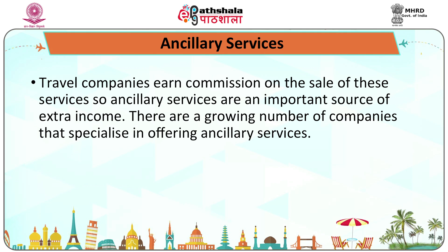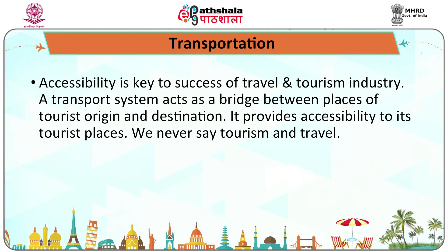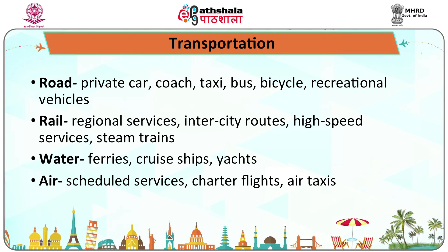Next is transportation or accessibility. Accessibility is key to success of travel and tourism industry. A transport system acts as a bridge between places of tourist origin and destination. The modes of transportation are road — private car, coach, taxi, bus, bicycle, recreational vehicles; rail — regional services or intercity routes, high speed services, steam trains; water — ferries, cruise ships, yachts; and air — scheduled services, charters, flights and air taxis.